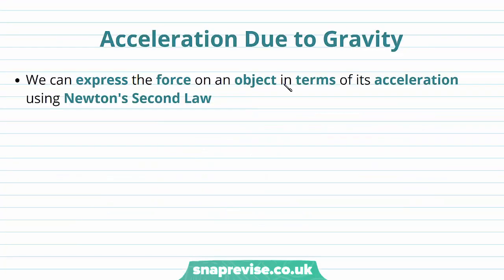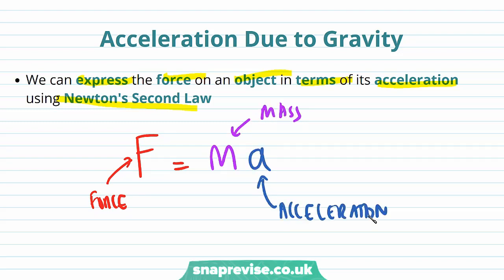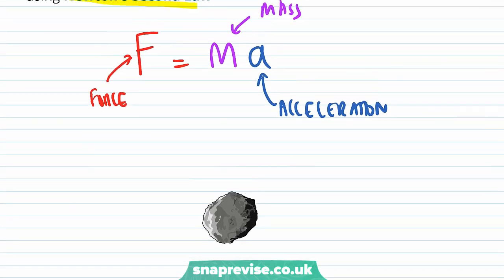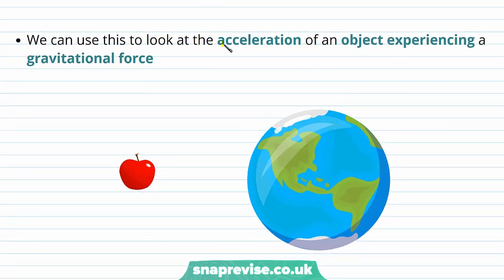We're now going to think about acceleration in a gravitational field. We can express the force on an object in terms of its acceleration using Newton's second law, which states that force on an object is equal to the mass of an object times the acceleration of the object. For example, if we know the mass of this asteroid and its acceleration, we can find the force that's acting on it.